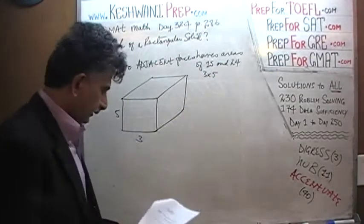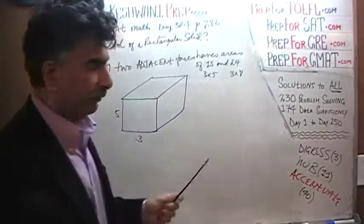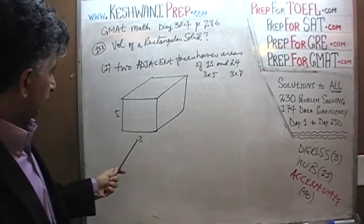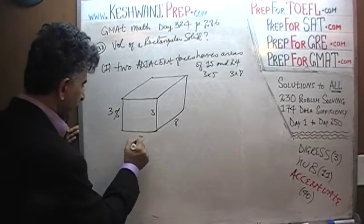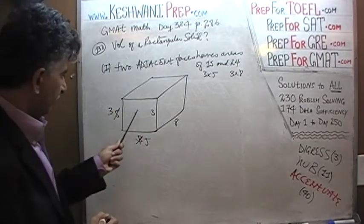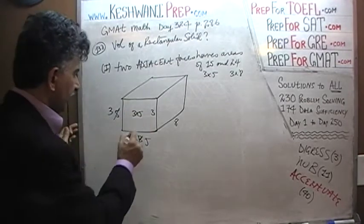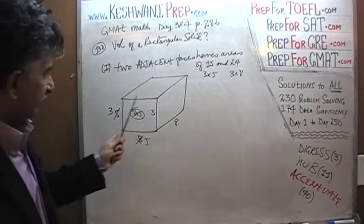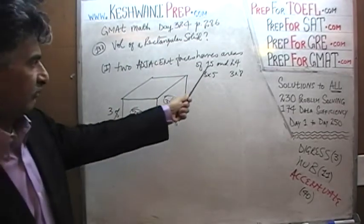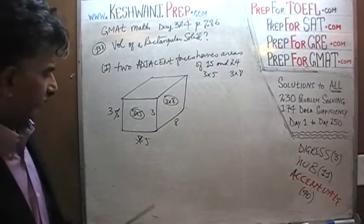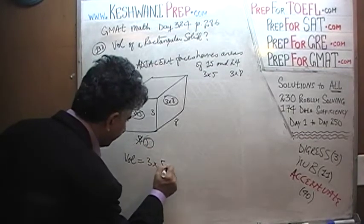So here is a 3 by 5. And then I see 24. If you want the area of 24, and if this is 3 by 5, let's make this 3 by 8 — because 3 has to be common, this side has to be common. If I call this 8, then this has to be 3, and this would have to be 5. So the area of the front face is 3 by 5, which is 15. The area of this face is 3 by 8, which is 24. So we have two adjacent faces with areas of 15 and 24. The volume of this solid is going to be 3 times 5 times 8. But that's one possibility.